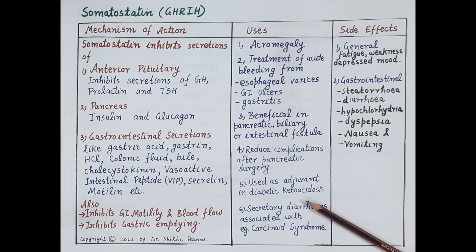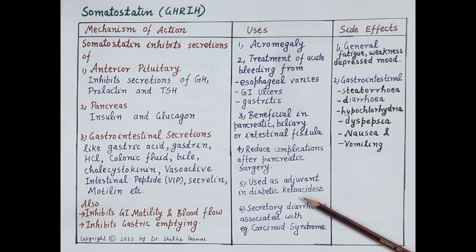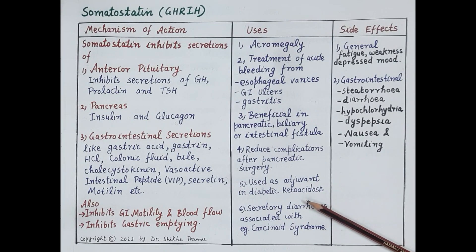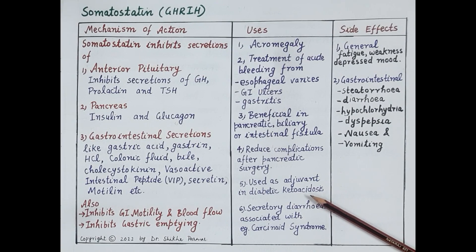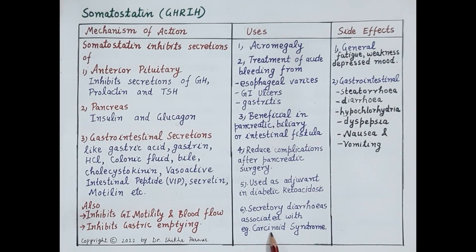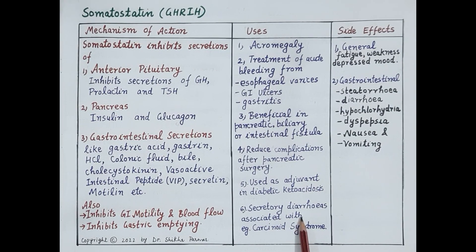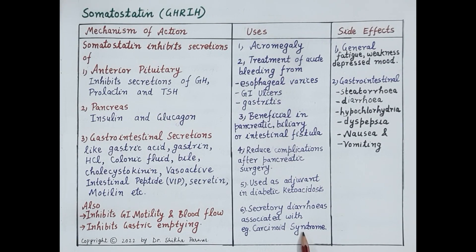Somatostatin is also useful in diabetic ketoacidosis, which occurs due to an excessive increase in blood glucose. Since somatostatin inhibits secretion of glucagon from the pancreas, it is used as an adjuvant or add-on drug in diabetic ketoacidosis. It is also useful in the treatment of secretory diarrheas associated with carcinoid syndrome, which usually causes excess secretion of serotonin.